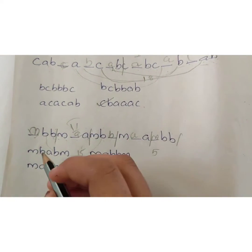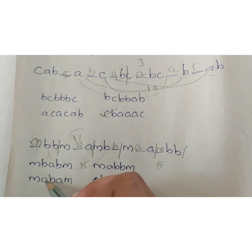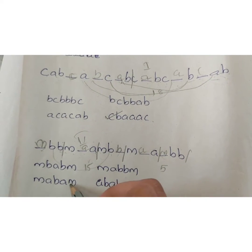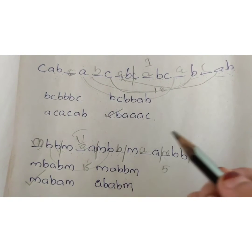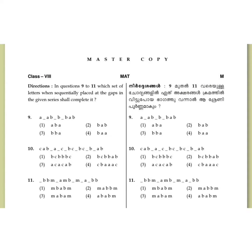Now we will answer the questions. Question B and C is the correct answer. Question 9: A-A-B-B-B-A-B. This is how we do it. This is our equation. Press B and A.